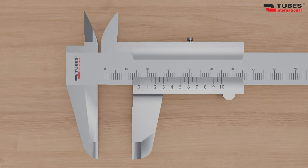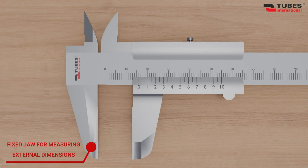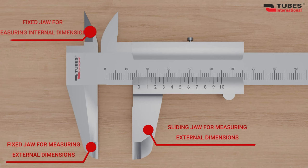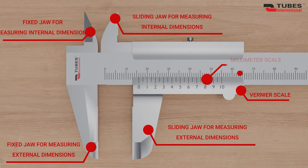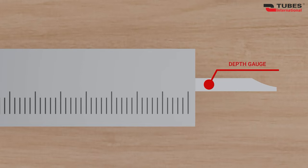Before we begin, let's take a closer look at the caliper. The caliper consists of a fixed jaw for measuring external dimensions, sliding jaw for measuring external dimensions, fixed jaw for measuring internal dimensions, vernier scale, millimeter scale, vernier lock, and depth gauge.